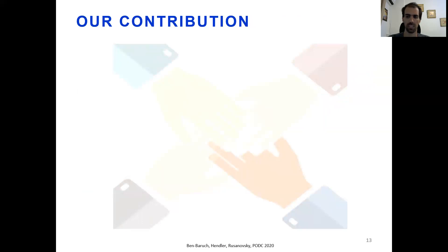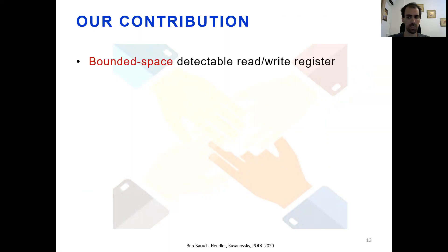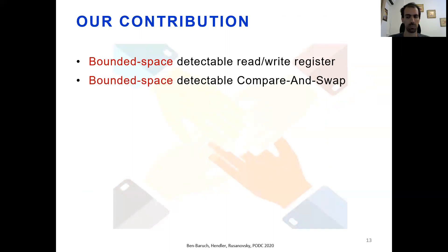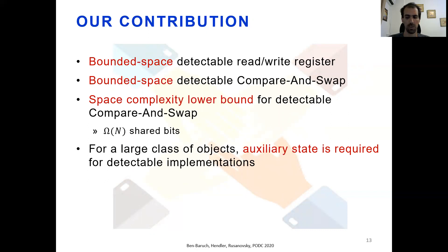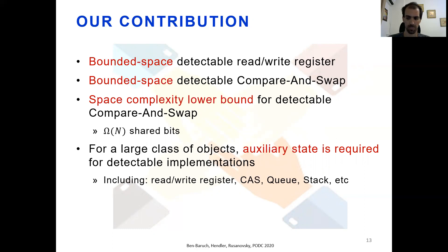In this work, we provide a negative answer to the first question, presenting the first bounded space detectable read-write register implementation. We also present a bounded space detectable implementation for compare-and-swap. In addition, we prove the space complexity of our compare-and-swap implementation is asymptotically optimal by presenting a matching space lower bound of Omega(n) shared bits for any detectable compare-and-swap implementation. Finally, we prove that for a large class of objects, auxiliary state is indeed required for detectable implementation. This class includes read-write register, compare-and-swap, queue, stack, and more.